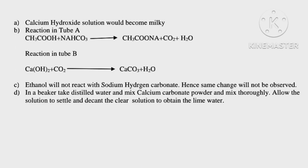Here is the answer: Calcium hydroxide solution would become milky. Reaction in tube A: CH3COOH + NaHCO3 gives CH3COONa + CO2 + H2O. Reaction in tube B: Ca(OH)2 + CO2 gives CaCO3 + H2O. Ethanol will not react with sodium hydrogen carbonate, hence same change will not be observed.